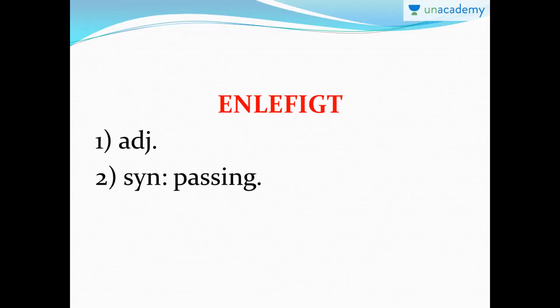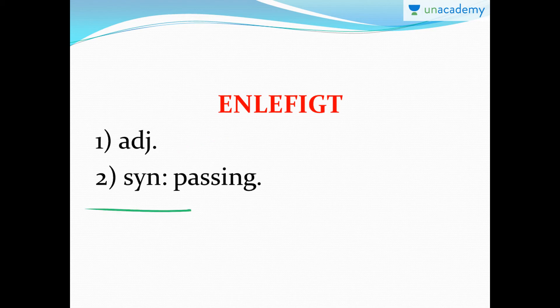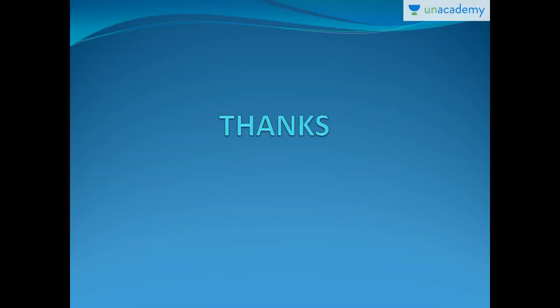Moving ahead, the jumbled word for this lesson is E-N-L-E-F-I-G-T. It's a very easy and common word. The hints are: it's an adjective, and the synonym is passing. This is an easy word if you've read the sonnets of Shakespeare. Let me know if you found the word in the comment section. I'll see you guys in the next lesson — bye-bye.